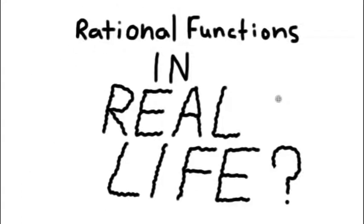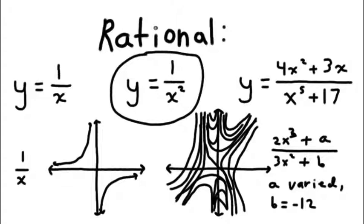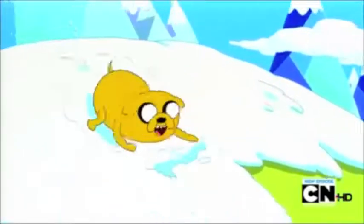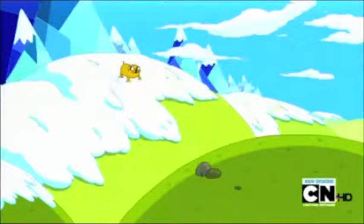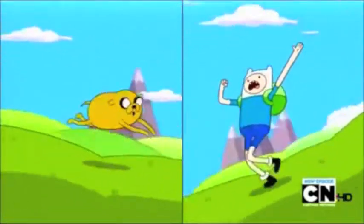An epic high five is a great, relevant example of a rational function that's applied in your day to day life. The equation y equals one over x squared can be used to model this situation. Watch as Finn and Jake come from opposite ends of the earth, getting closer and closer until the ultimate high five occurs.